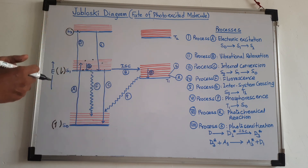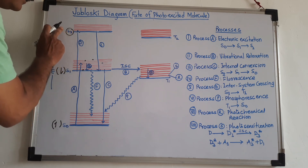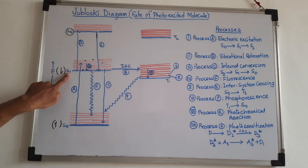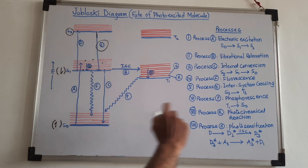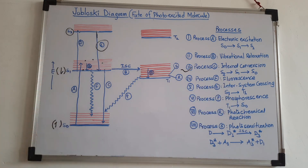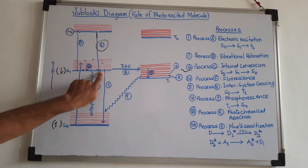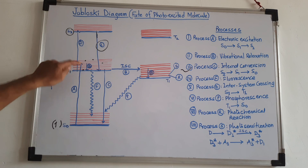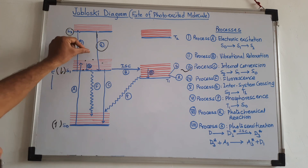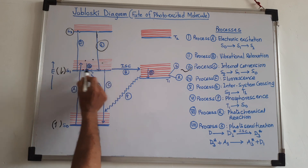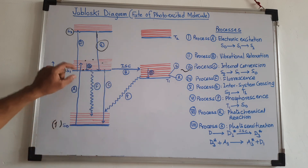That excitation to very high energy is not useful for photochemical reaction, so we are not interested in that kind of excitation. Instead, the molecule may drop down to the S1 electronic energy level — this is shown by process C, called internal conversion. Additionally, molecules may distribute among different vibrational energy levels within the same electronic energy level, and they also drop down to the lowest vibrational energy level. This is called vibrational relaxation.